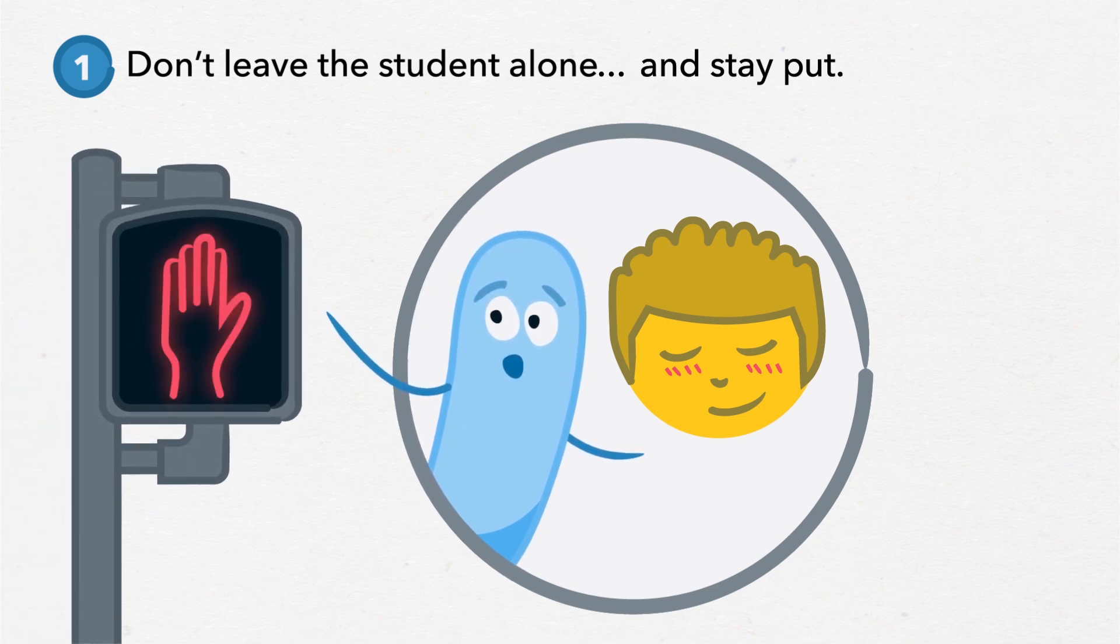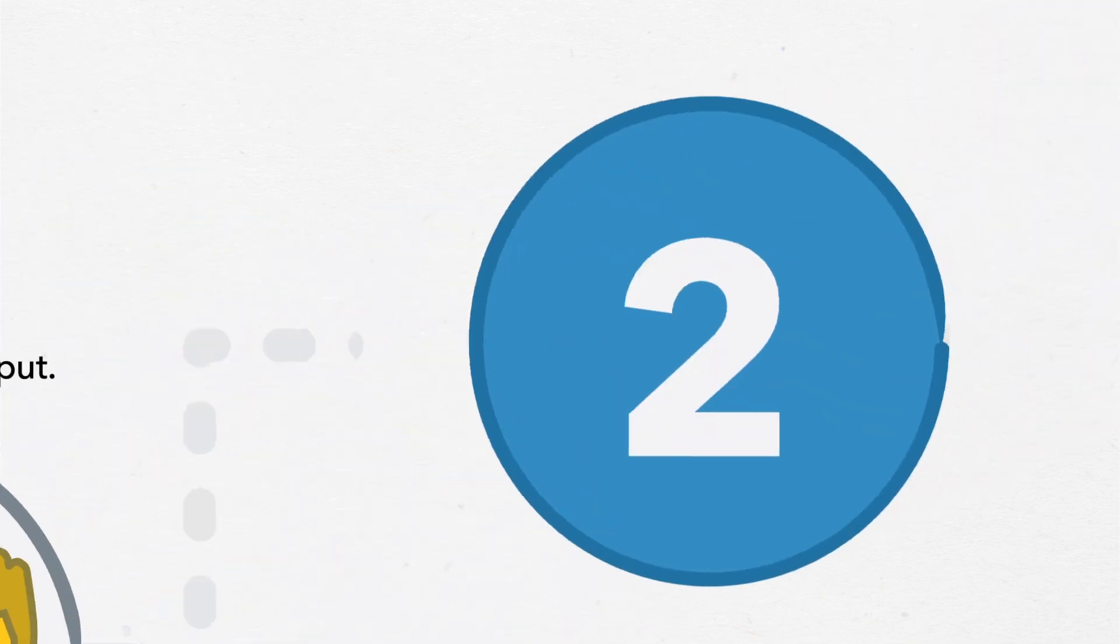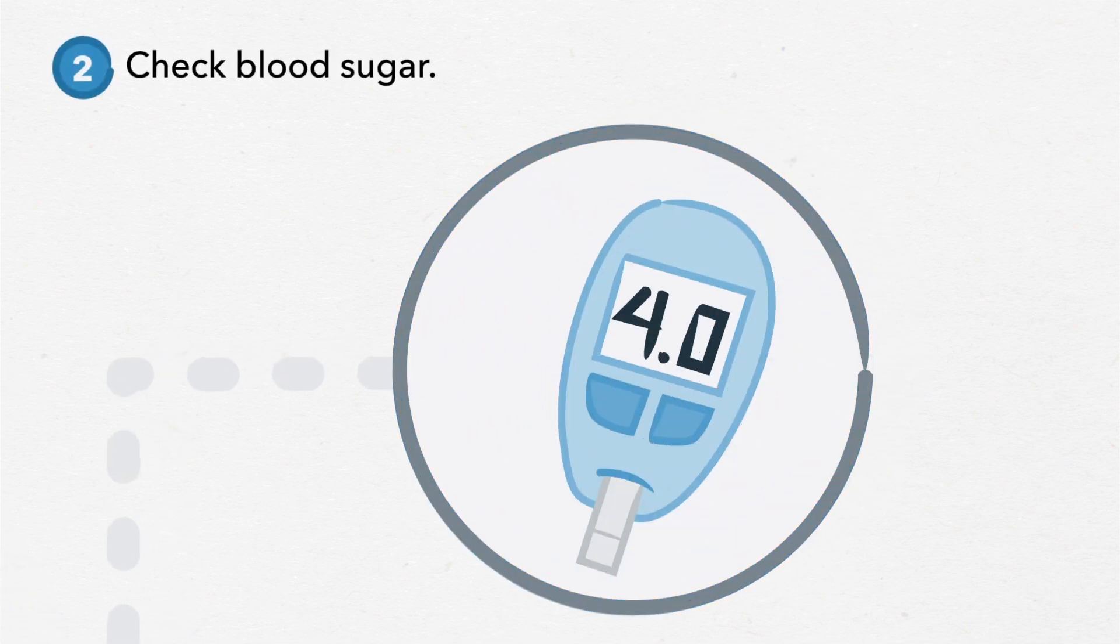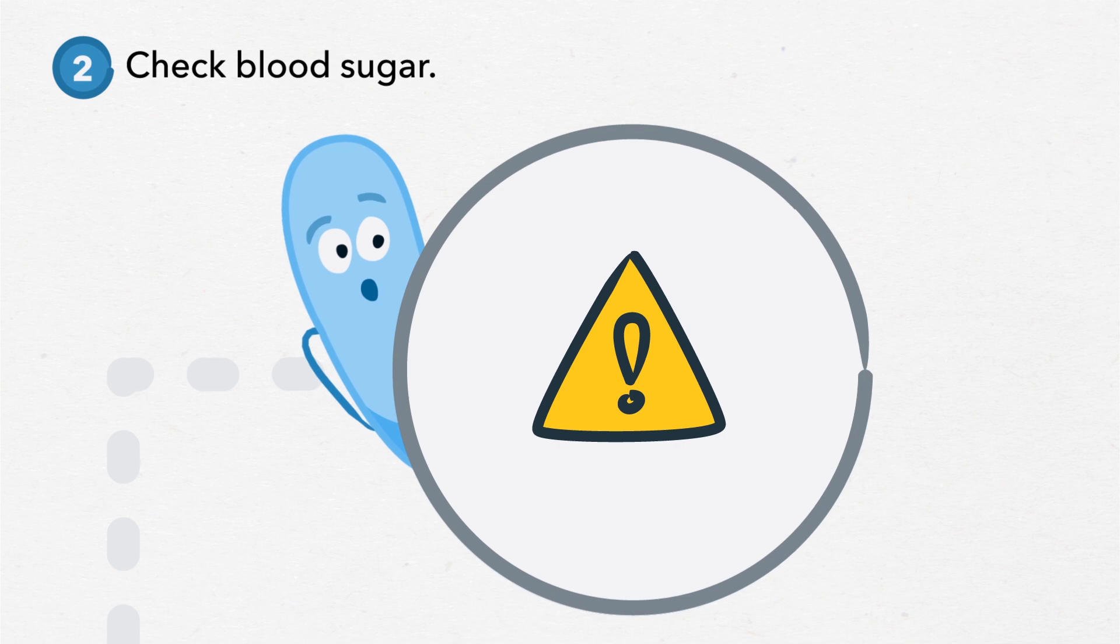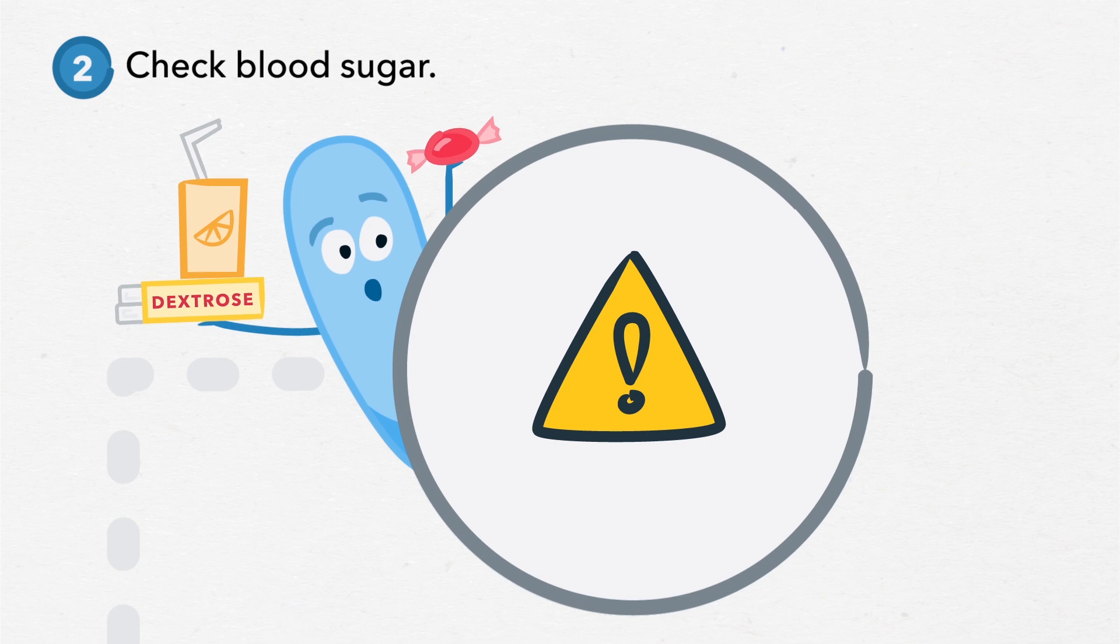Walking can make blood sugar go even lower. Check blood sugar. If it's below 4.0 or if you don't have a meter but suspect low blood sugar, give the student a fast-acting sugar such as candy, dextrose tablets, or juice.